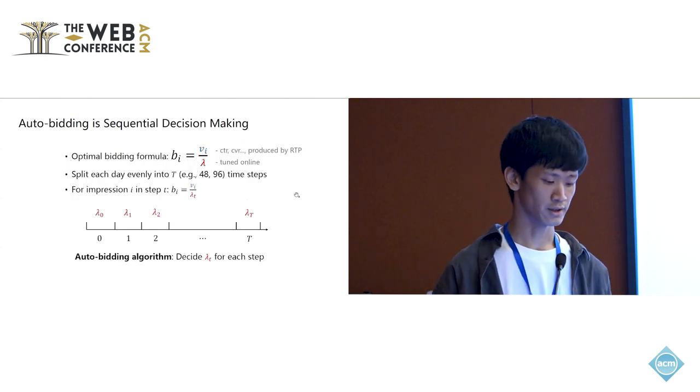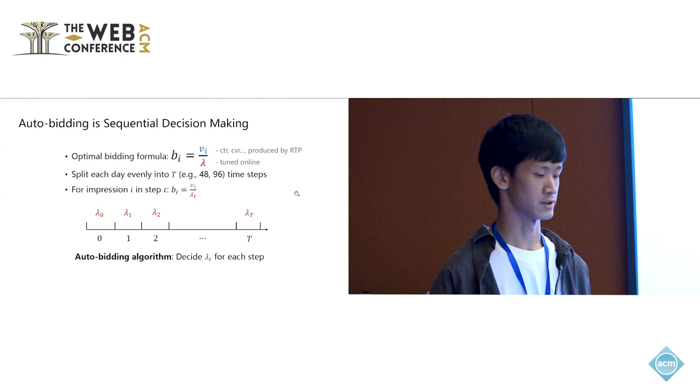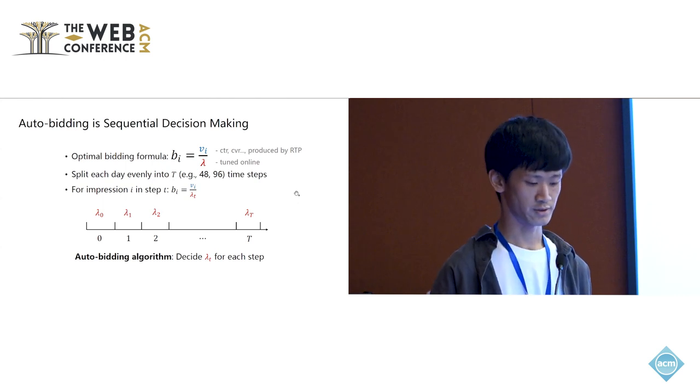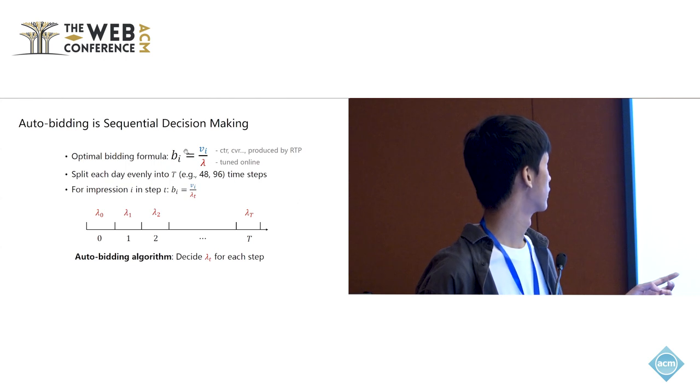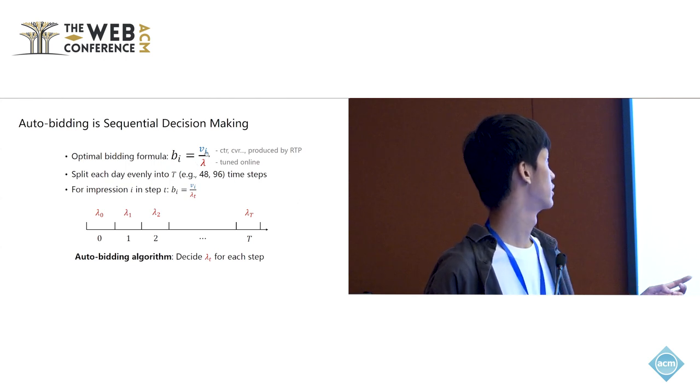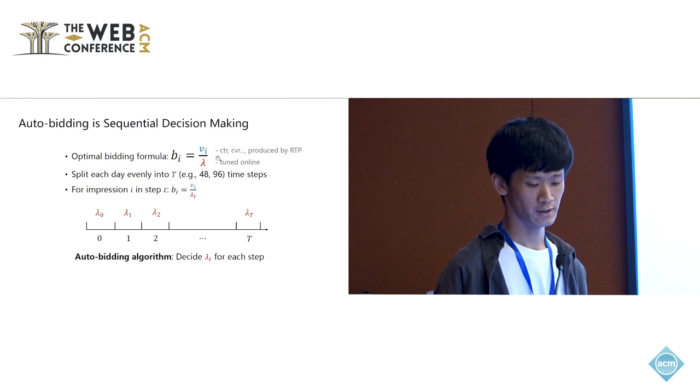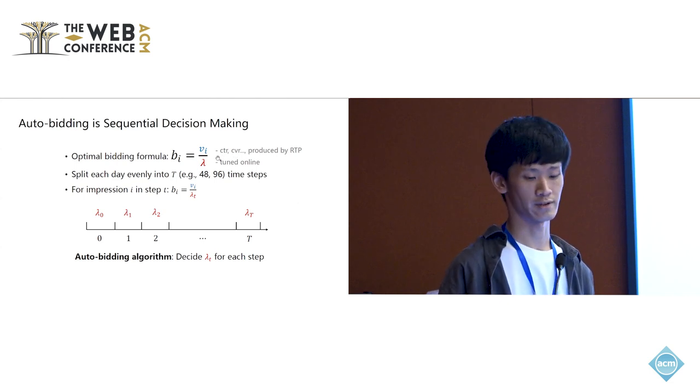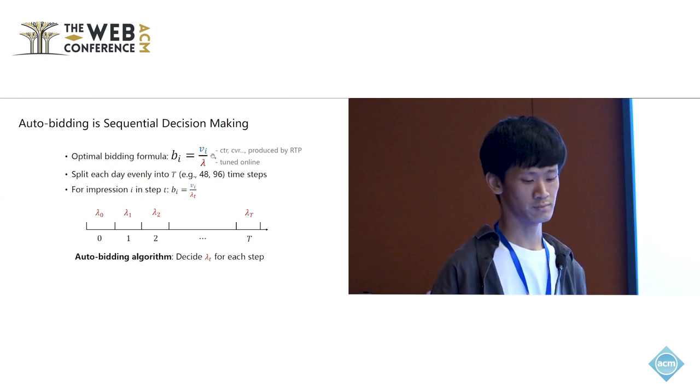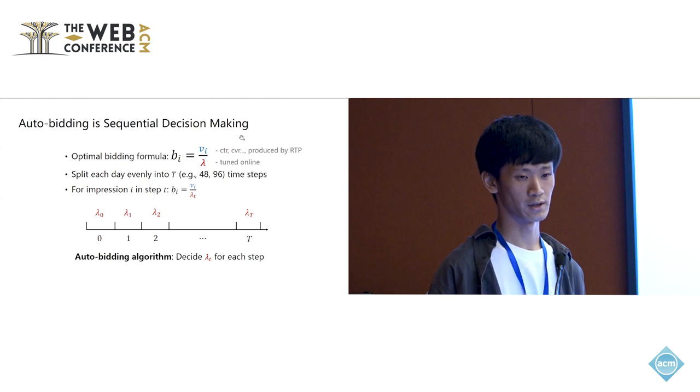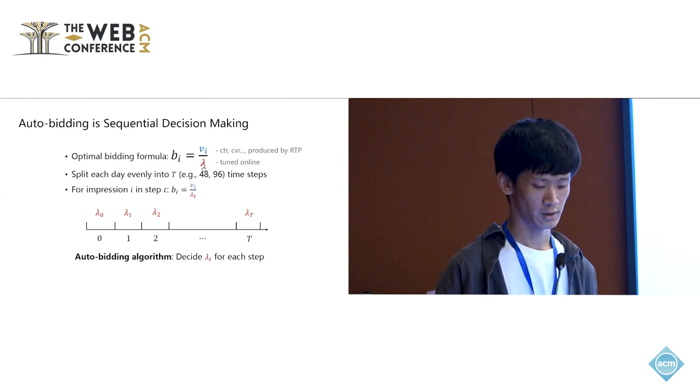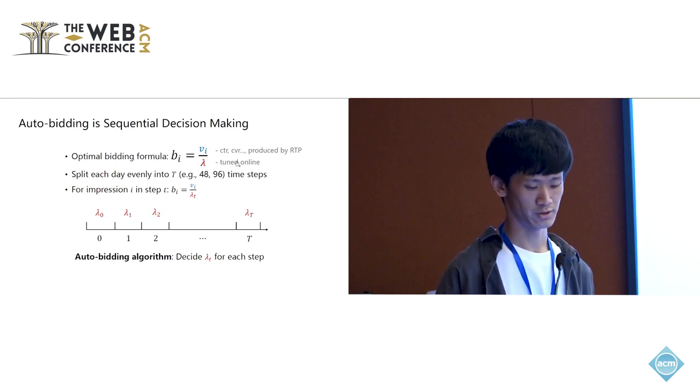There's actually an optimal bidding formula for this auto-bidding problem. That is to say, our bid for one impression should be the value of the impression divided by a parameter lambda. The value here could be a click-through rate, conversion rate, depending on the objective of the advertiser. In the system, this value is produced by the real-time prediction module. But this lambda parameter, we should tune it online.